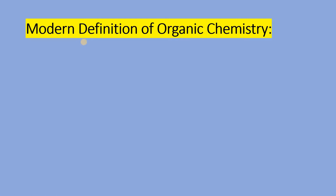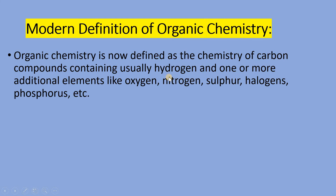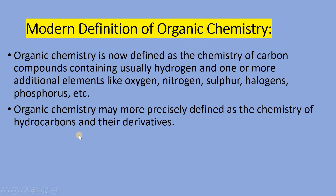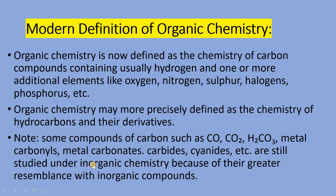From this point, scientists gave the modern definition of organic chemistry. Organic chemistry is now defined as the chemistry of carbon compounds containing usually carbon and one or more additional elements like oxygen, nitrogen, sulfur, halogens, or phosphorus. Or more precisely, organic chemistry is the chemistry of hydrocarbons and their derivatives. However, some compounds of carbon such as CO, CO2, H2CO3, metal carbonates, carbides, cyanides etc. are still studied in inorganic chemistry because of their greater resemblance with inorganic compounds.